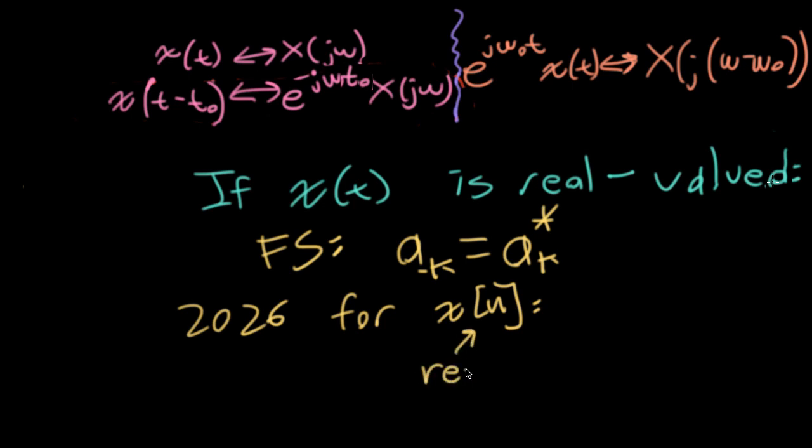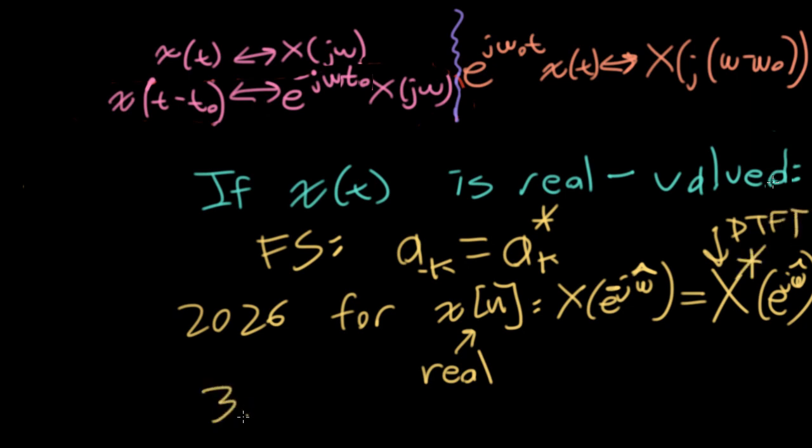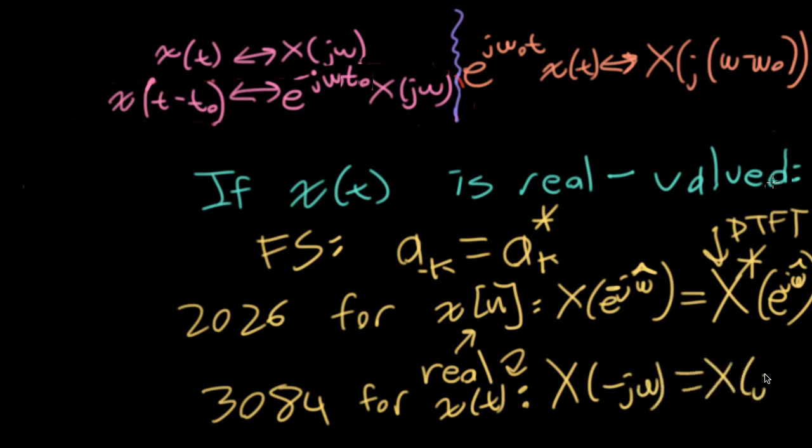In 2026, if x[n] was real, you have the conjugate symmetry big X(e^(j omega hat)) evaluated at negative omega hat is equal to big X(e^(j omega hat)) that discrete time Fourier transform complex conjugated. For a continuous time x(t), if x(t) here is real valued, then we have the same kind of conjugate symmetry,